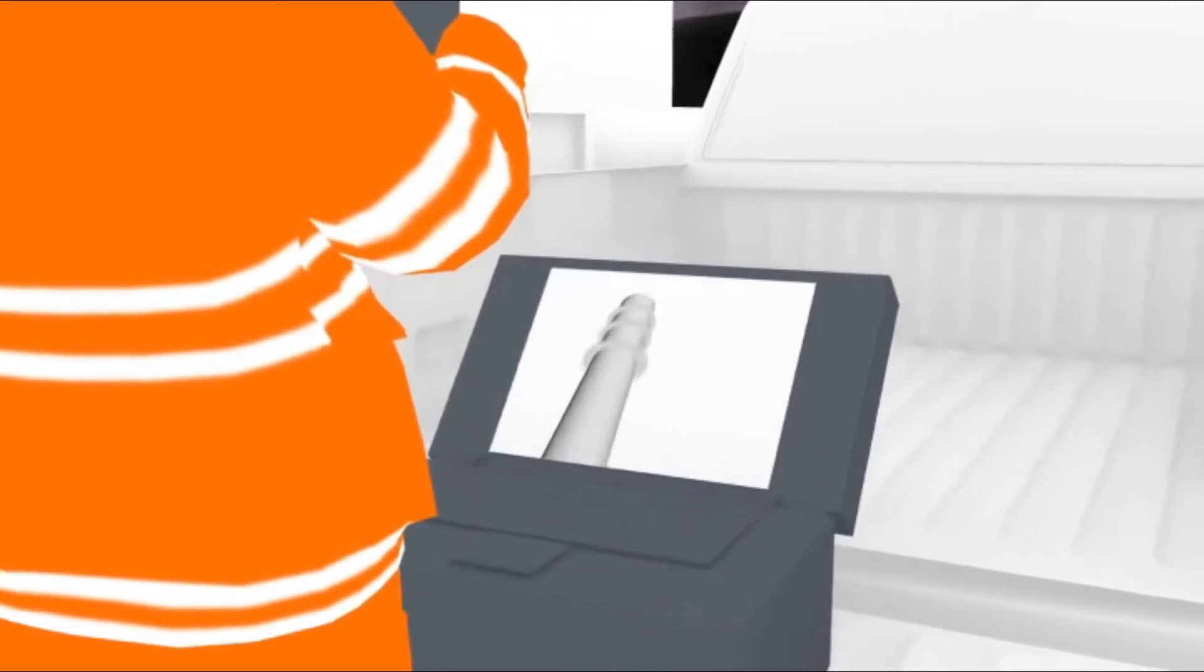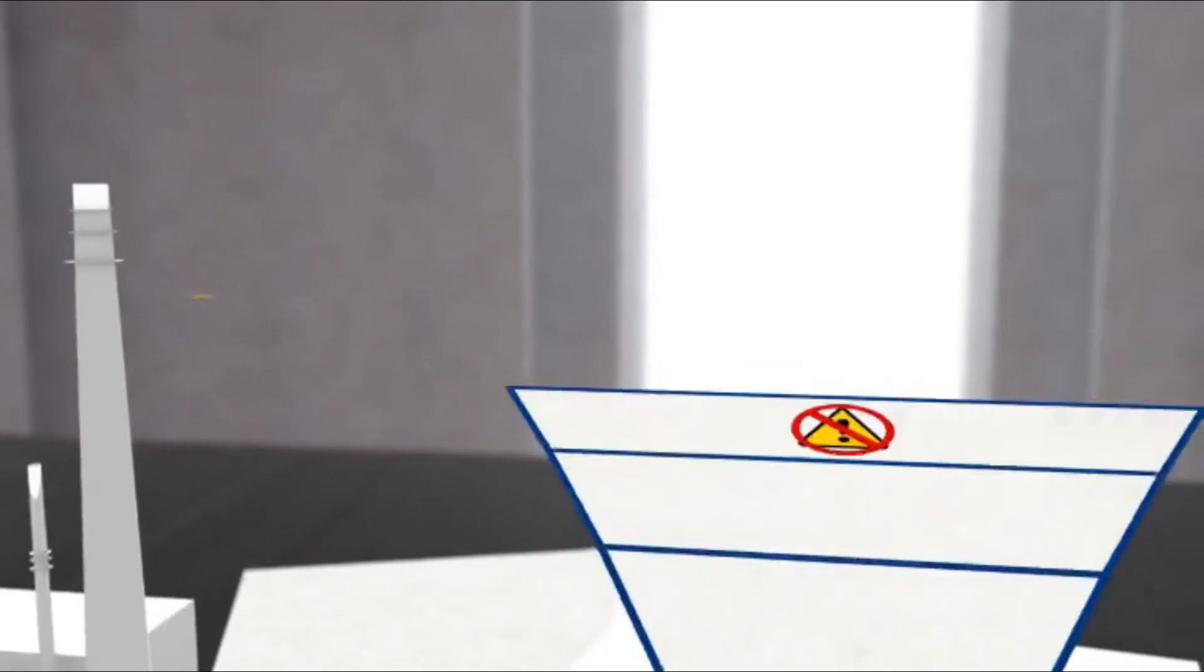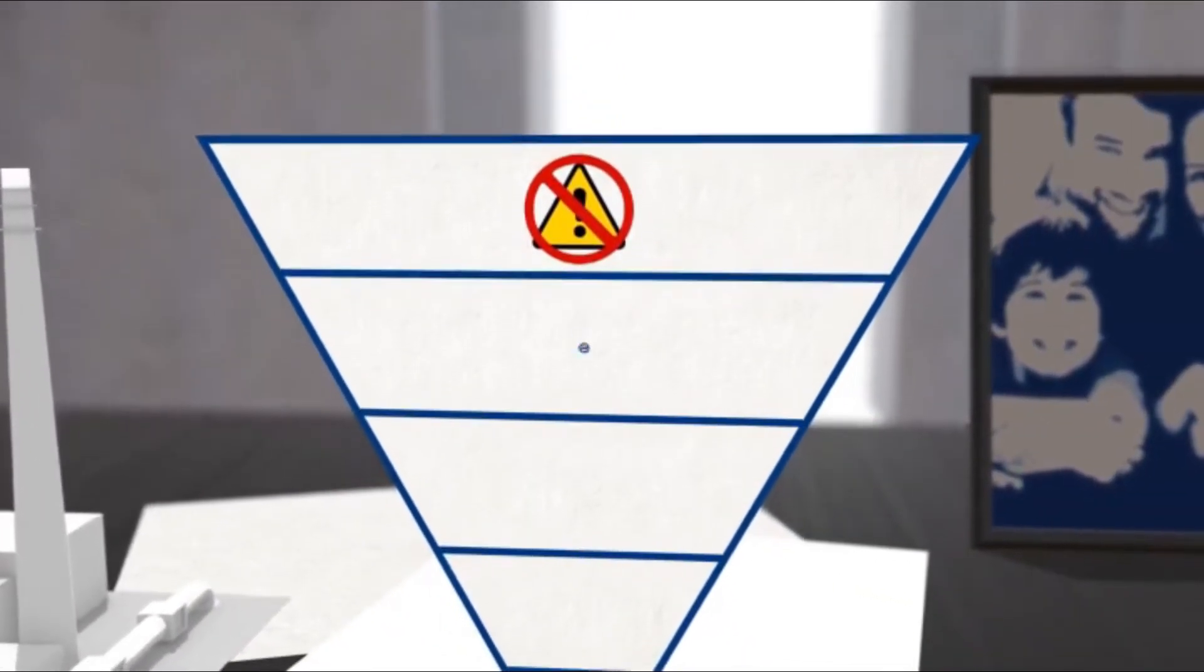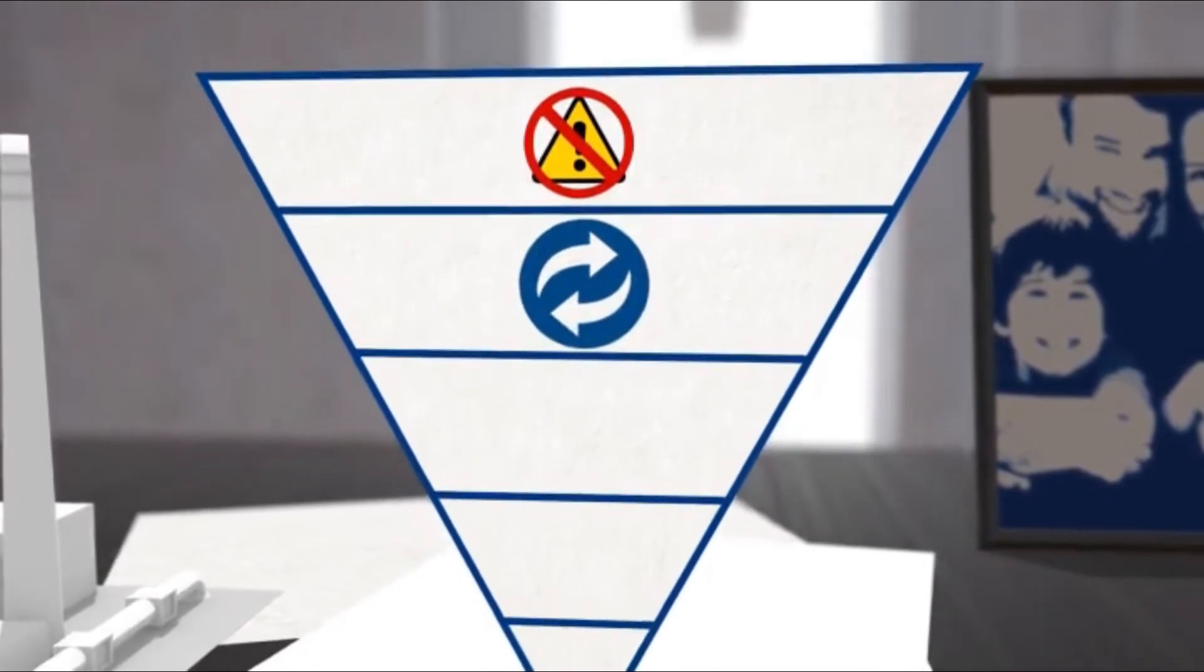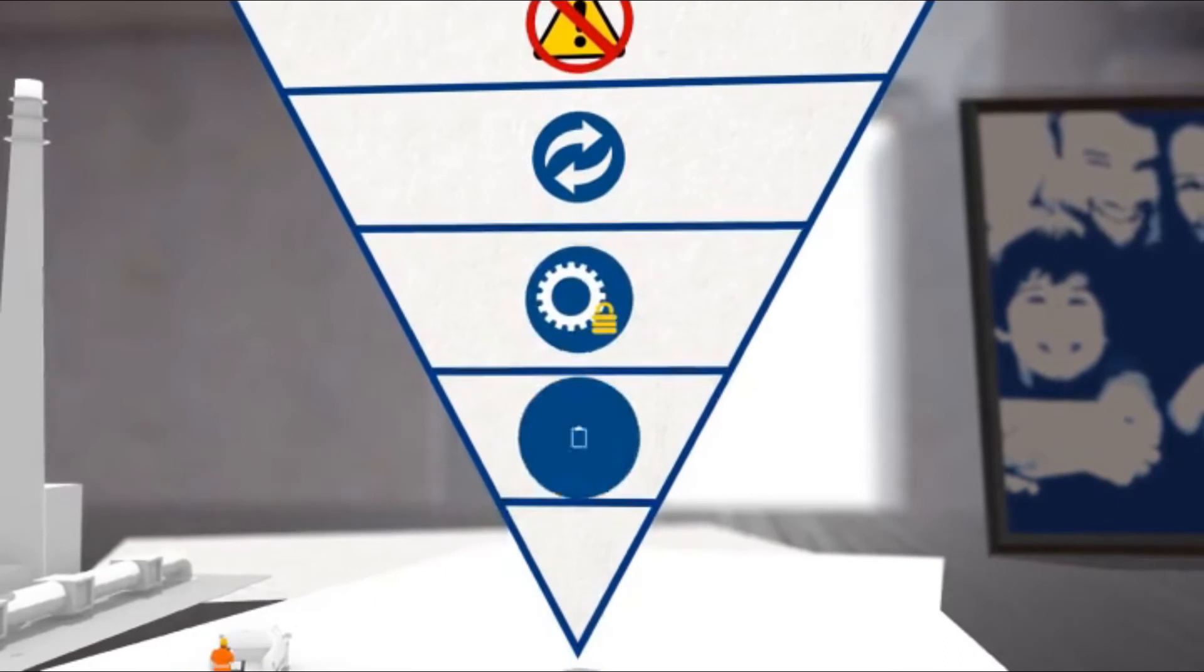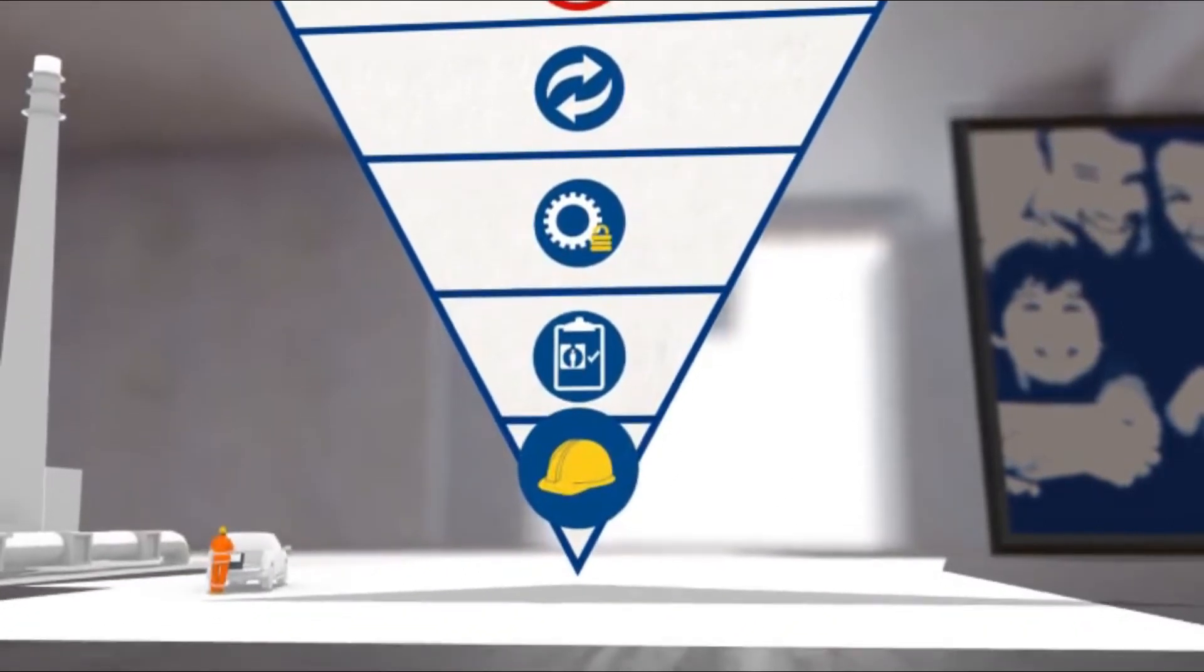But what happens when you find a hazard that can't be removed? That's when you go down through the other layers of the hierarchy of control: substitution, engineering controls, administrative controls, and finally the use of personal protective equipment.